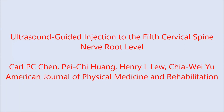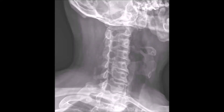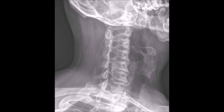This video will demonstrate the technique of cervical spine ultrasound-guided selective nerve root block. A patient with narrowed right cervical spine fifth neuroforamen, as seen by this x-ray, and with radicular symptoms to the right upper extremity, received ultrasound-guided injection to the fifth nerve root.